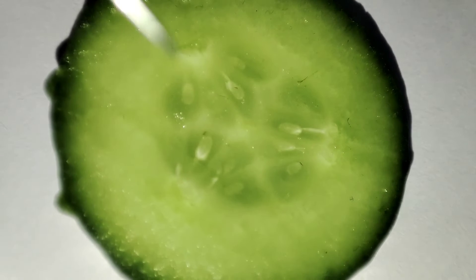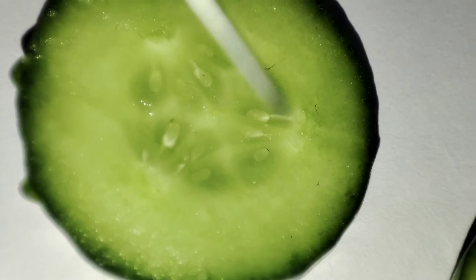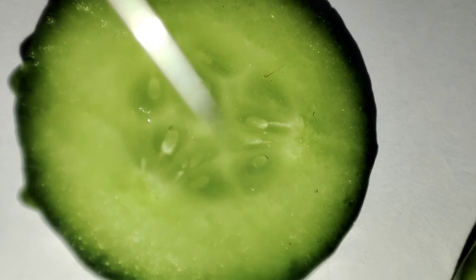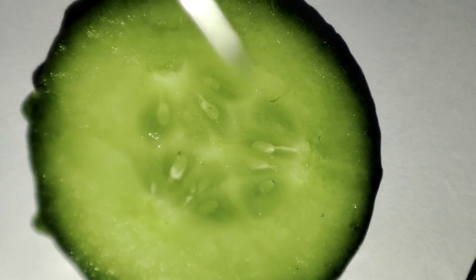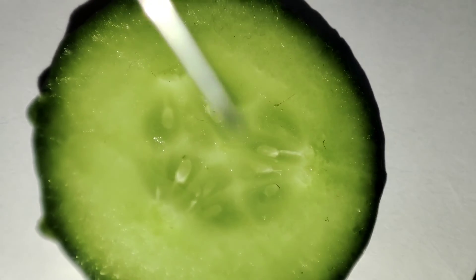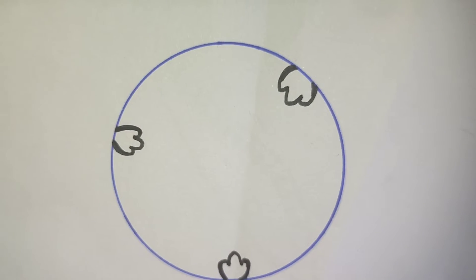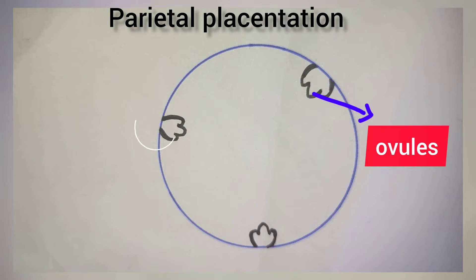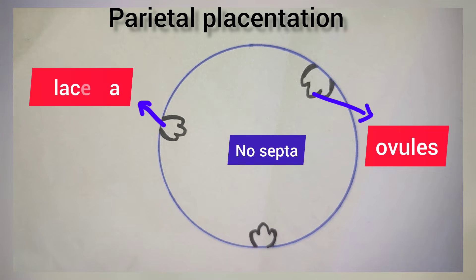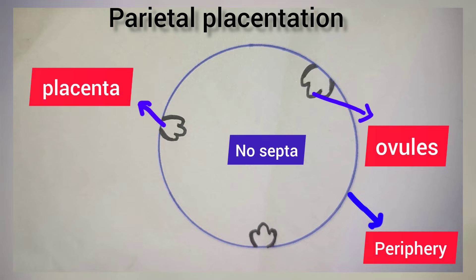Another type is parietal placentation, where the ovules are attached to the periphery of the ovary wall with formation of false septa. An example is cucumber, that is Cucumis sativus. Parietal placentation is also found among members of family Brassicaceae. In the diagram of parietal placentation in cucumber, the ovules and placenta are attached to the periphery of the ovary wall with false septa, in a peripheral arrangement.